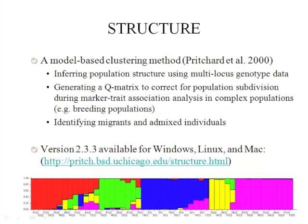The last program is Structure. This program implements a model-based clustering method for inferring population structure using multi-locus genotype data. You can also generate the Q-matrix to correct for population subdivision during marker-trait association analysis in complex populations like breeding populations. An additional benefit of this program is to identify migrant and mixed individuals. Currently, version 2.3.3 is available for all three OS platforms at the provided website.